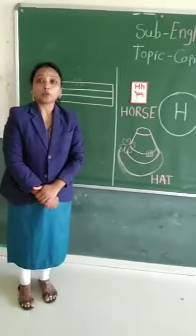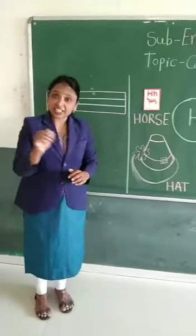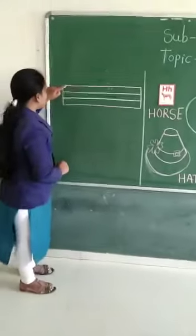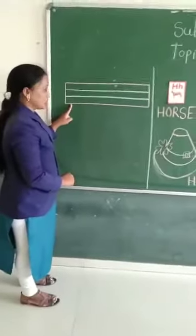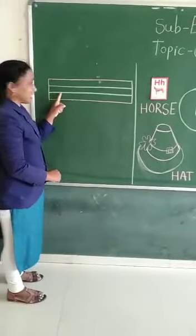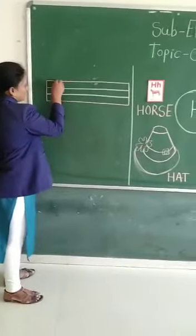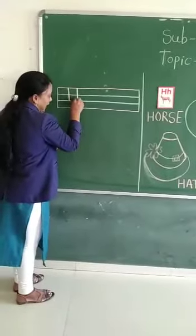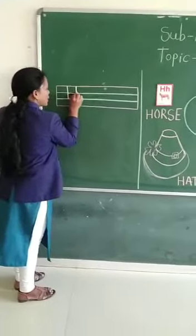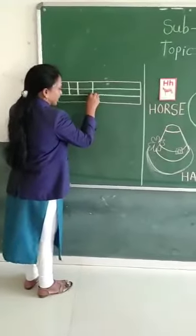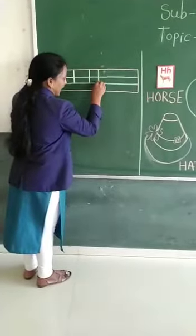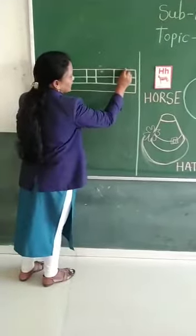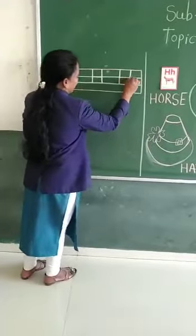Okay students, how to write H? Now we have to write H. How many lines? One, two, three, four lines. So how many lines do we have to do? Three lines. Standing line. Then a small slipping line in the middle. Standing line. Standing line. Slipping line.